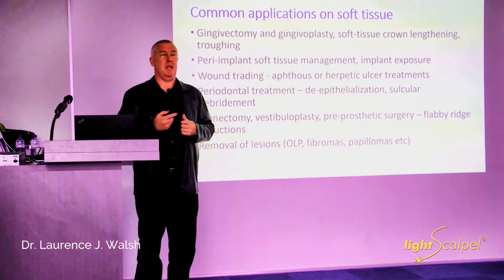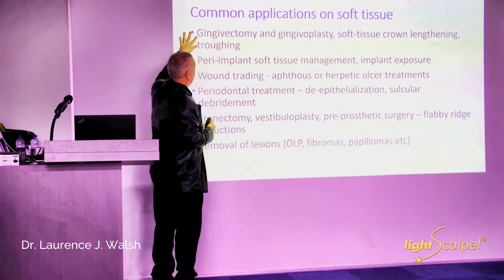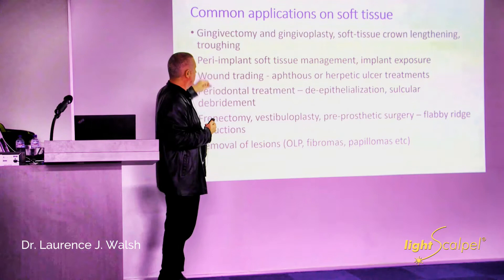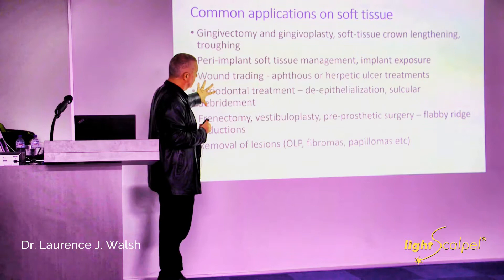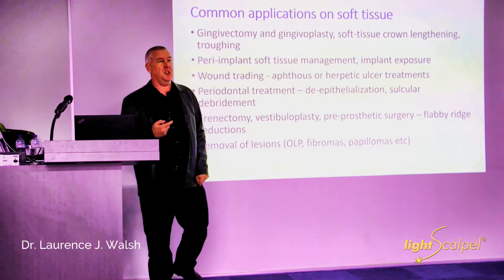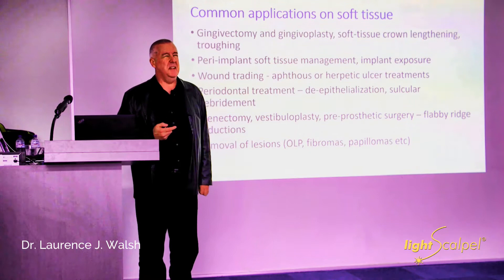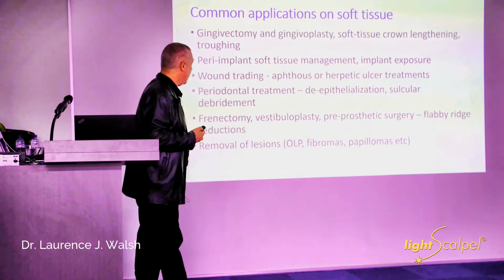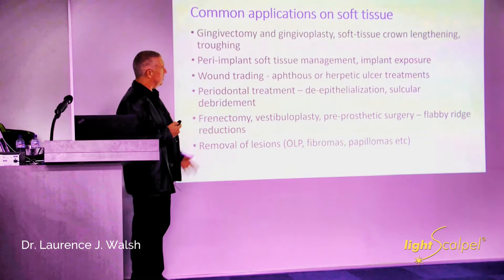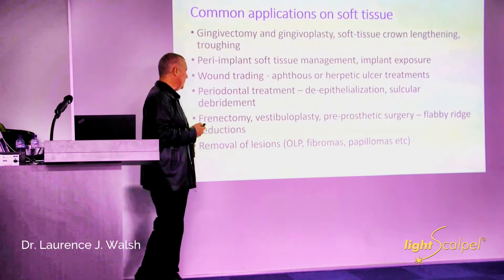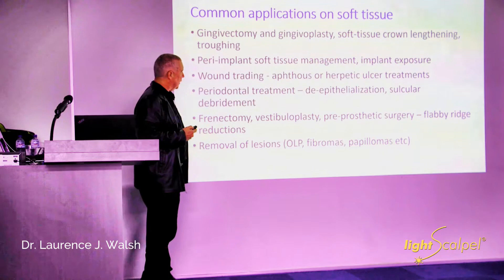But soft tissue surgery is the dominant use of a CO2 — shaping tissue around teeth or around implants, converting the surfaces of ulcers into wounds that heal very quickly, altering patterns of epithelium in periodontal sites, doing procedures like vestibuloplasty, frenectomy, or different forms of pre-prosthetic surgery. As a recent graduate I really avoided pre-prosthetic surgery, but with a CO2 laser I got to really like it, and it became a great entry into treating exceptionally old patients — and along the way removing lots of lesions.